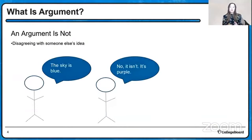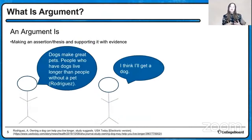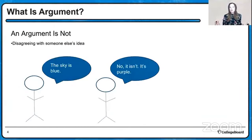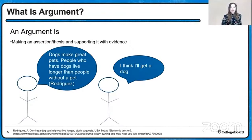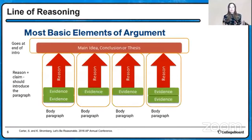Before we start, we need to talk about argument. An argument isn't what we typically see on social media where people are just disagreeing. What it is, however, is making an assertion or a thesis and then supporting it with evidence. We always want to have these elements: the main idea or focus, and then the reasons that support it with evidence.